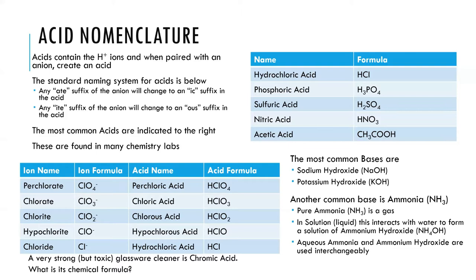When looking through different formulas, you can see all of the different names that can be associated just by seeing the chemical formula. Knowing what name would be used with what chemical formula is very helpful and useful in a chemistry lab, where many times things might be labeled just as a chemical formula. Knowing that full name can give you a lot of information about the compound itself.